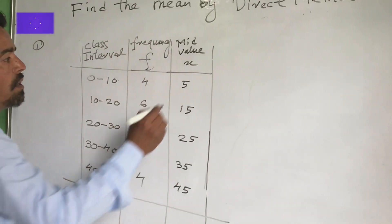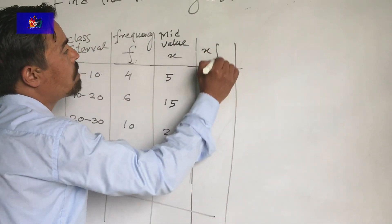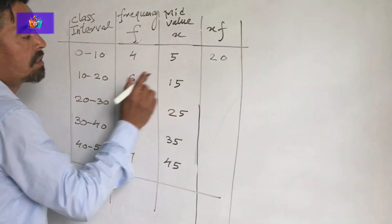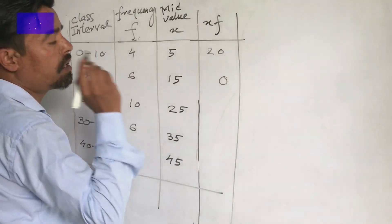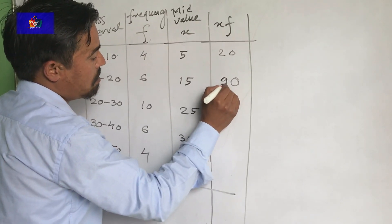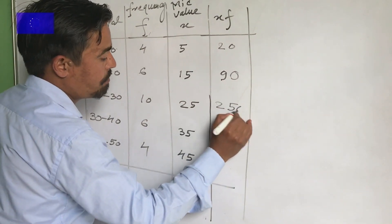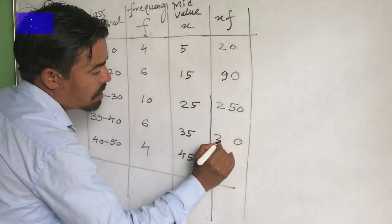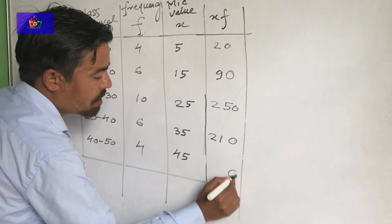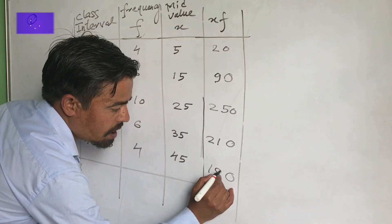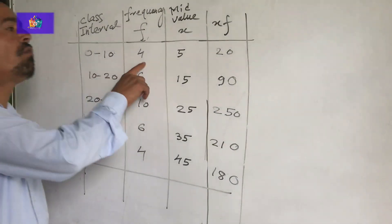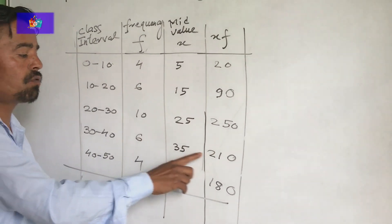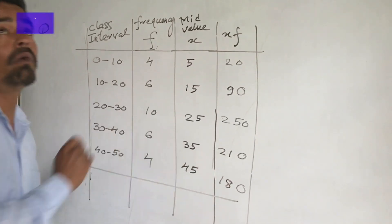This is X, frequency is F. Next column is XF: 4 times 20 equals 80 — wait, 4 times 5 is 20, 6 times 15 is 90, 10 times 25 is 250, 6 times 35 is 210, 4 times 45 is 180. Summation F: 4 plus 6 is 10, plus 10 is 20, plus 6 is 26, plus 4 is 30. Summation F is 30.